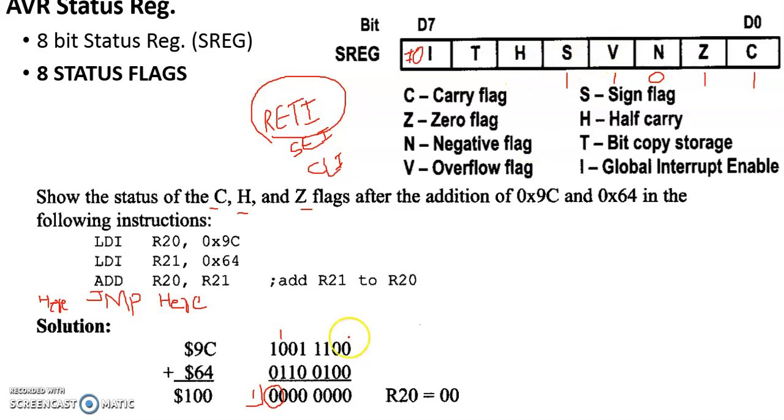Half carry: examining the lower nibble addition, there is a carry out from bit 3 to bit 4, so the half carry flag will also be set.